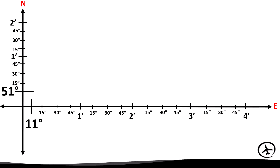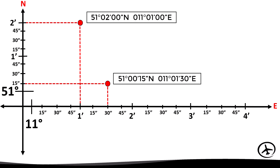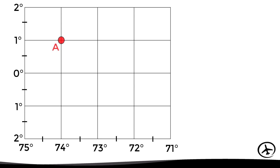For example, on a scale that includes minutes and seconds of arc between the degrees, the position of a red point would be expressed as a latitude of 51 degrees, 0 minutes, and 15 seconds north, while the longitude is 11 degrees, 1 minute, and 30 seconds east. Another point would be at 51 degrees, 2 minutes, and 0 seconds north and 11 degrees, 1 minute, and 0 seconds east. To determine coordinates, the latitude of point A is 1 degree — and to know if it is north or south, we look at the arrangement of the parallels.